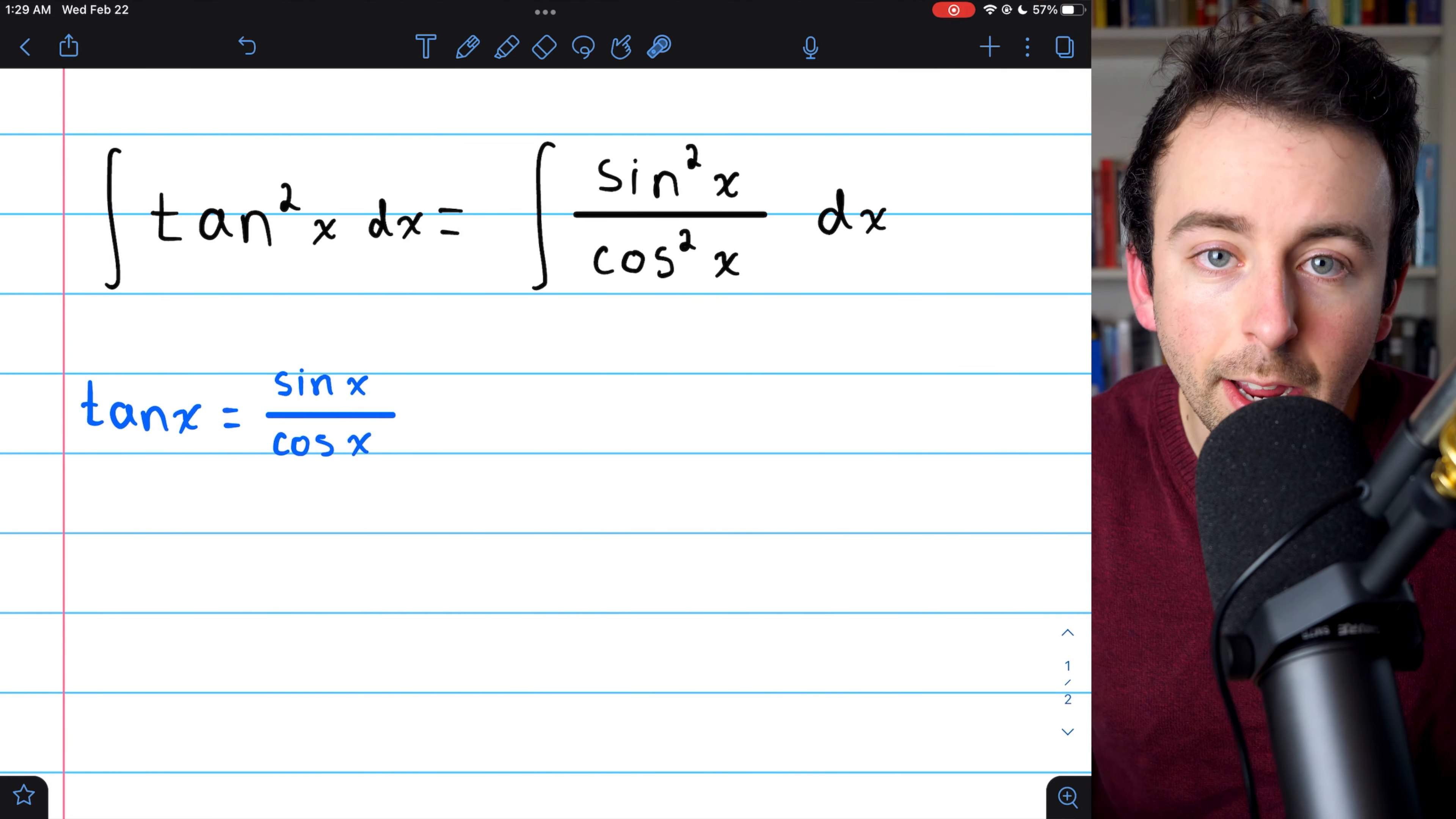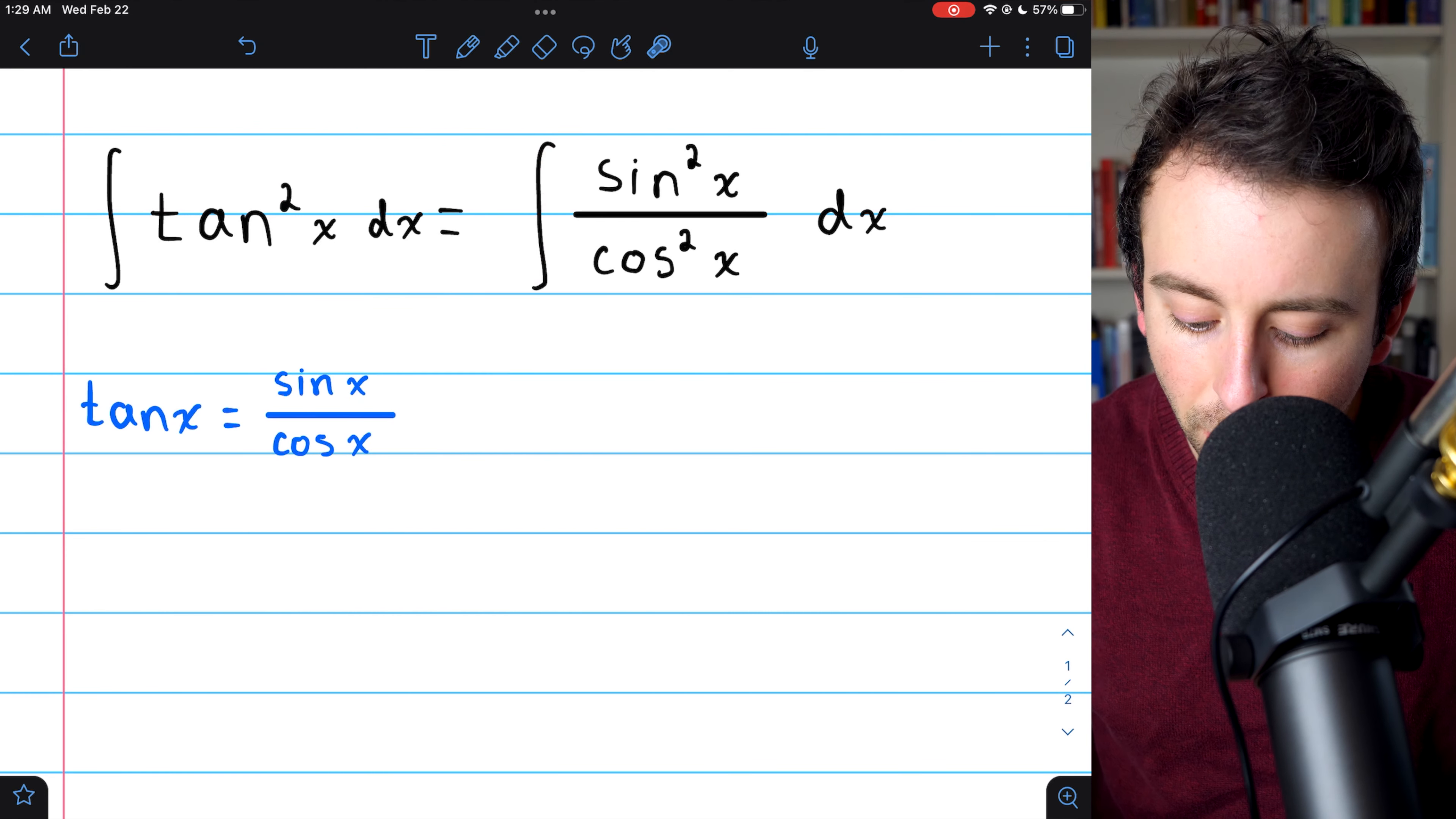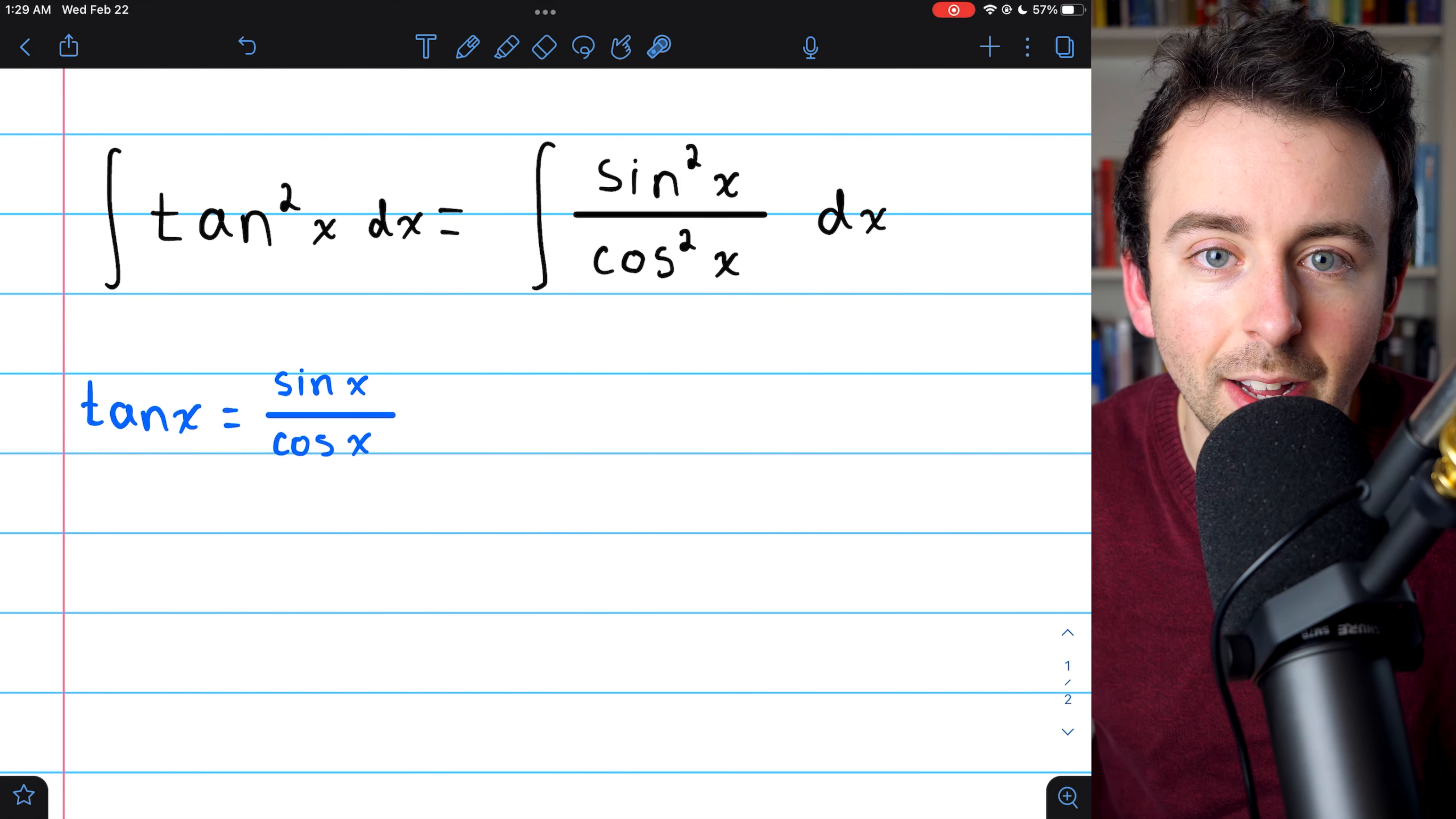We know that tangent is sine over cosine, so the integral of tangent squared is the integral of sine over cosine squared, which is the same as sine squared over cosine squared.